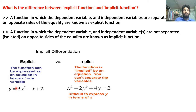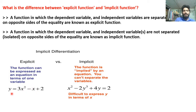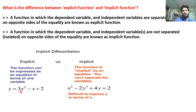जैसे यहाँ पर example देखिए: y is equal to 3x² minus x plus 2. इस example में x हमारा independent variable है और y हमारा dependent variable है। हर एक x की value के लिए y की value अलग-अलग आएगी। ऐसे functions को हम बोलेंगे explicit function, because y is fully expressed in terms of x.